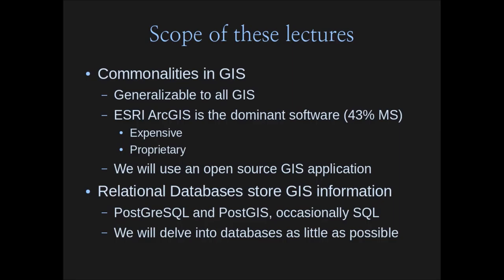First I want to talk about the commonalities in GIS so the information from this week of lectures is generalizable to all of GIS, not just one particular program. What we're using here is not the dominantly used software. R is the dominant analysis program for most of what I've had you do so far; ImageJ has nothing that really competes with it. But for GIS, I won't have you use the dominant software.